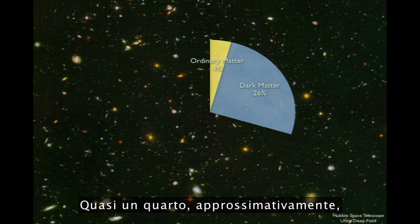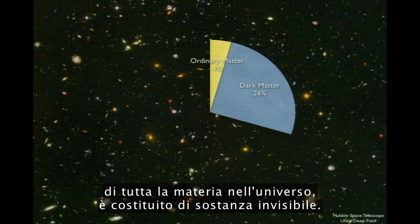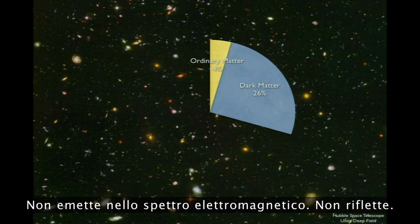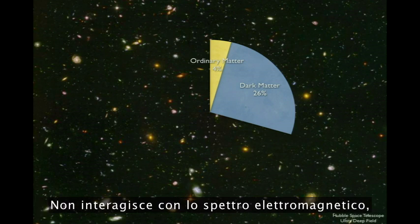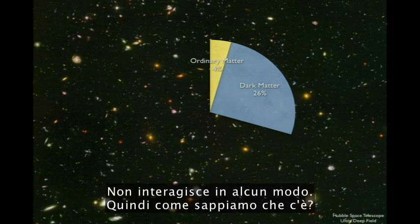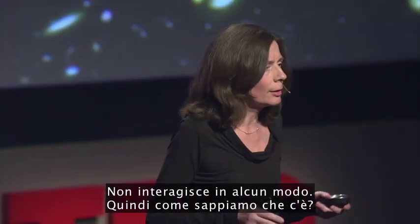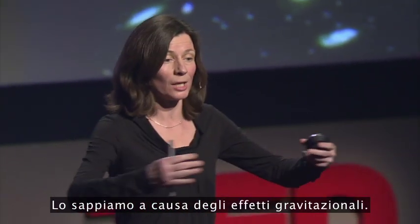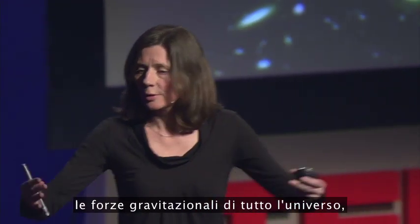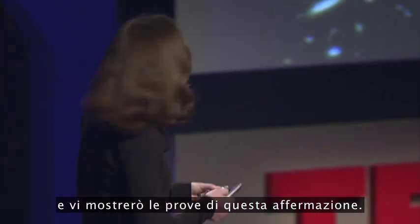Almost a quarter of the matter in the universe is stuff that's invisible. By invisible, I mean it doesn't absorb in the electromagnetic spectrum, it doesn't emit, it doesn't reflect, it doesn't interact with the electromagnetic spectrum at all — which is what we use to detect things. So how do we know it's there? We know it's there by its gravitational effects. In fact, this dark matter dominates the gravitational effects in the universe on a large scale.